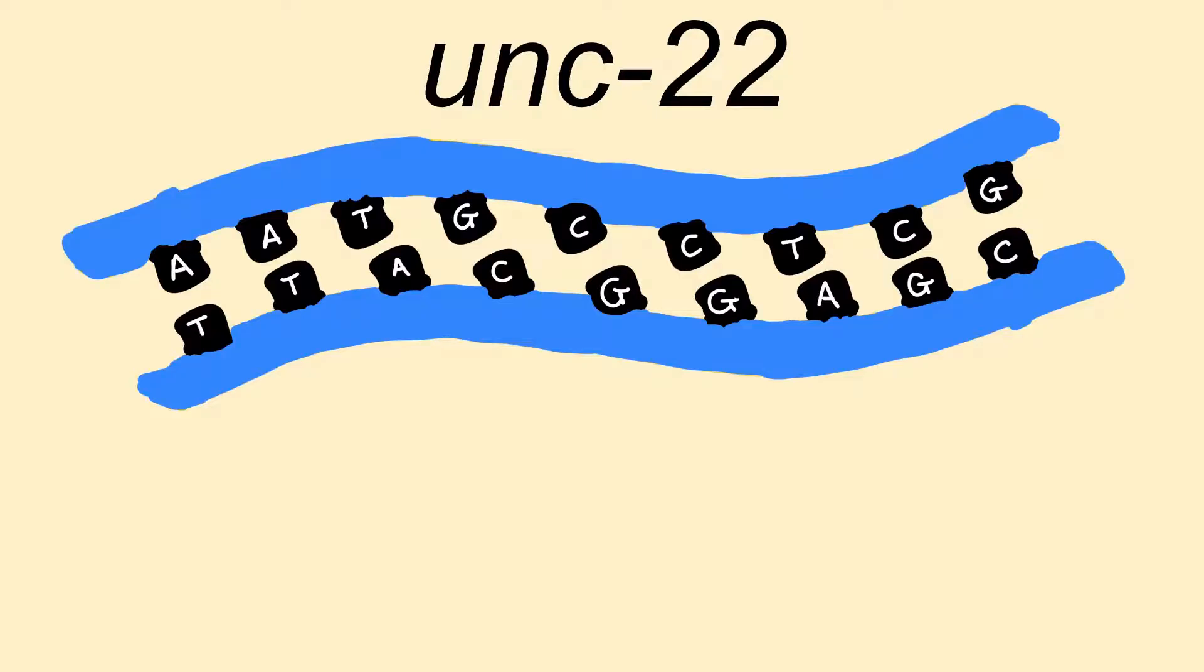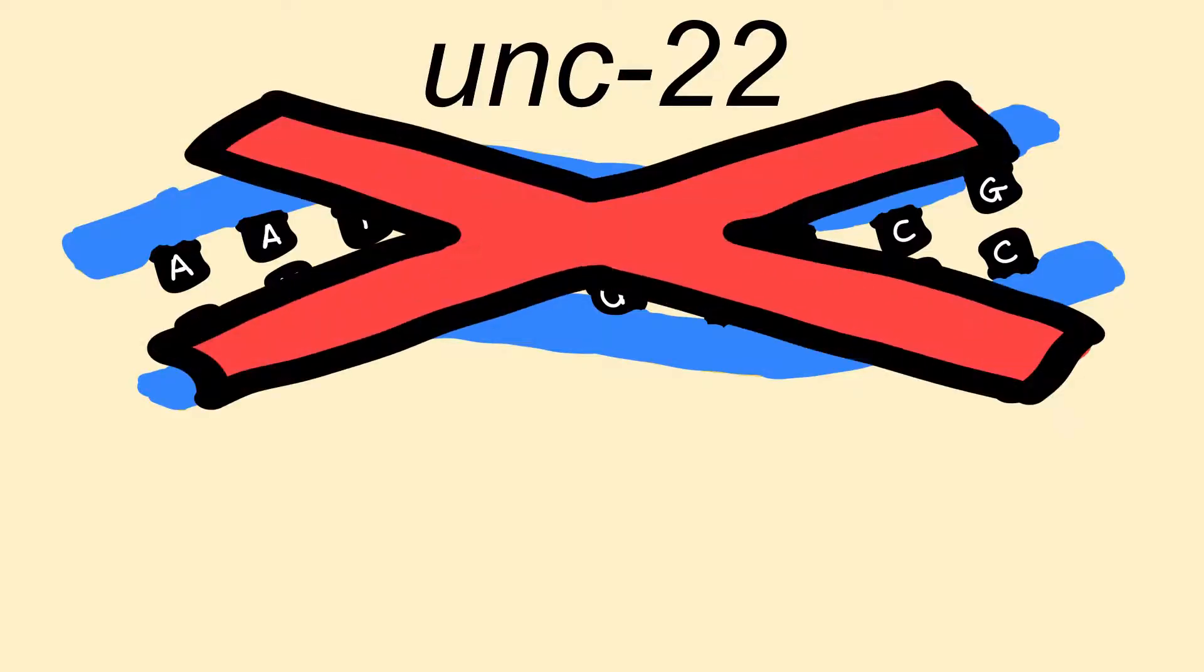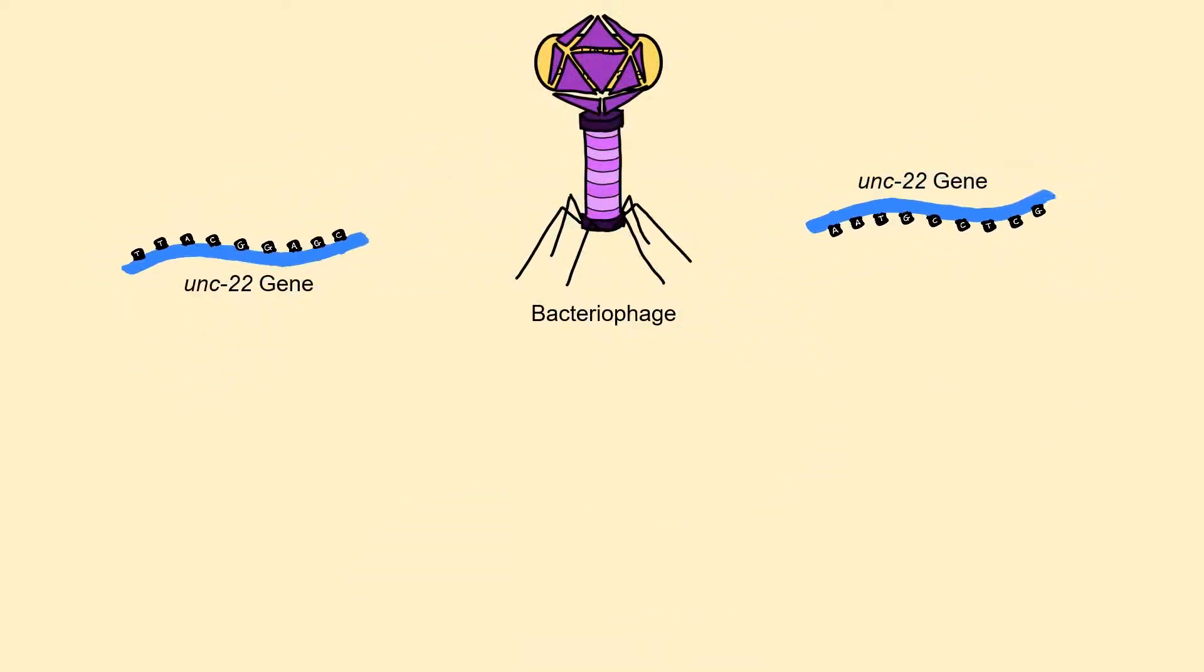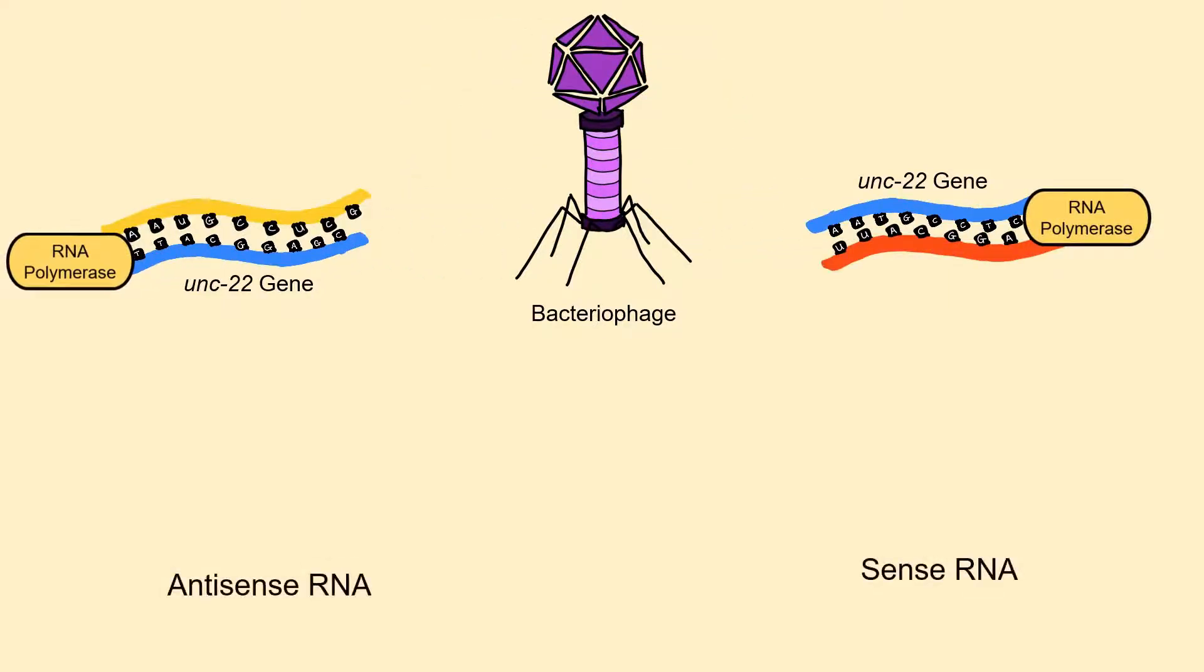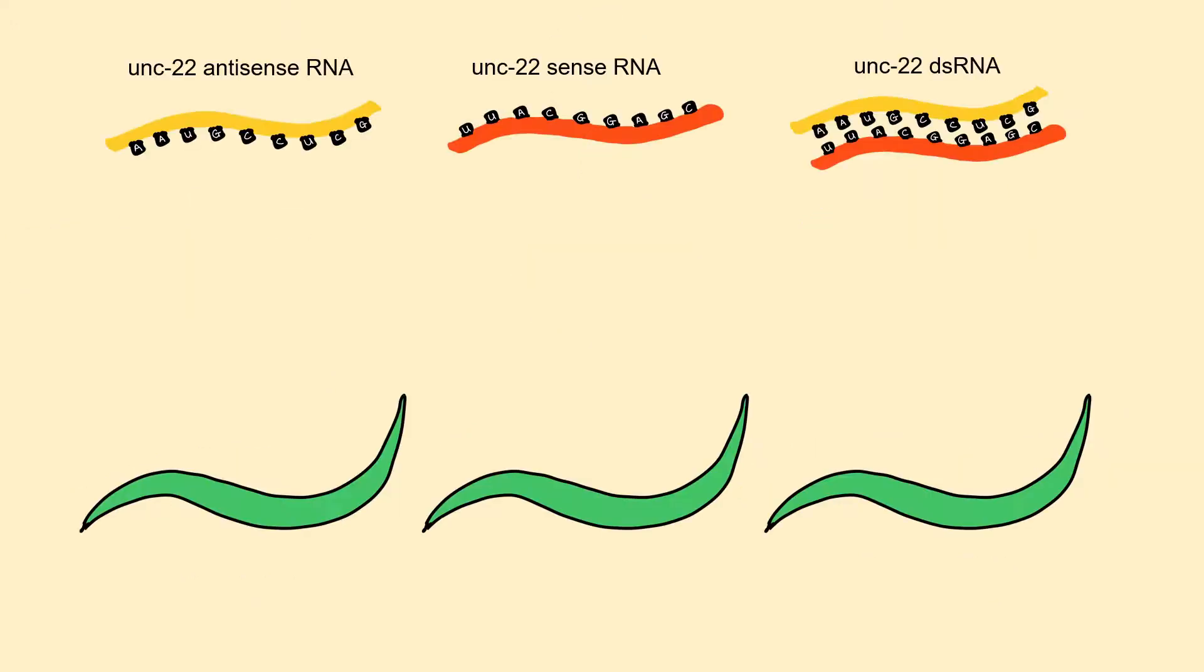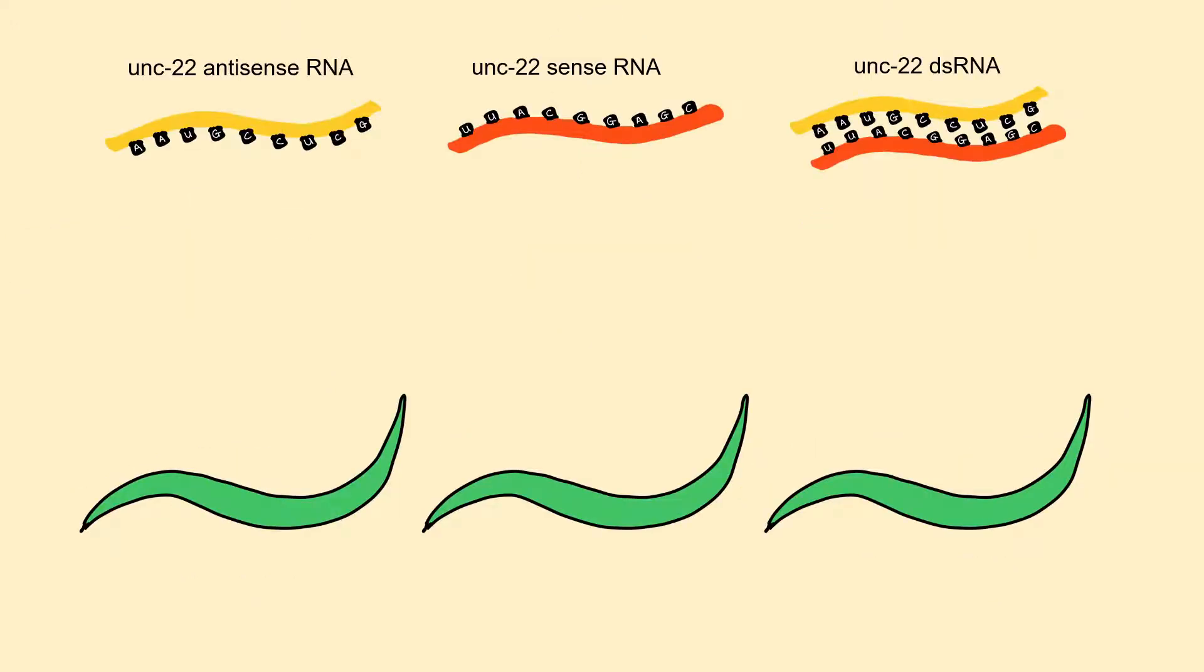To test this, Fire and Mello use a gene called UNC22 which when knocked out produces a twitching phenotype. By using a DNA template of UNC22 gene region and bacteriophage RNA polymerases they produce single-stranded sense and antisense RNAs. After being purified, these RNA strands were then individually injected into C. elegans organisms while other C. elegans organisms were injected with RNA populations deliberately prepared to contain double-stranded RNAs.